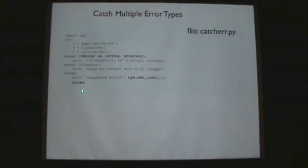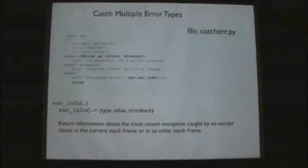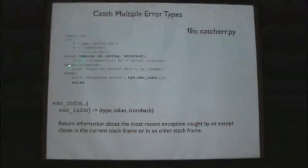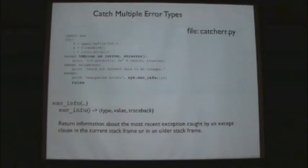`raise` basically says 'we have a problem, don't pass this on anywhere, raise it to the interpreter and let it deal with it.' It allows you to raise an exception without silently passing it on. You can catch an exception, print stuff out that you want to see, but still make that exception known to the interpreter by raising it. If you don't have `raise`, you're saying 'I don't really care, just keep going.' With `raise`, you make sure unexpected exceptions get caught during the debugging stages.